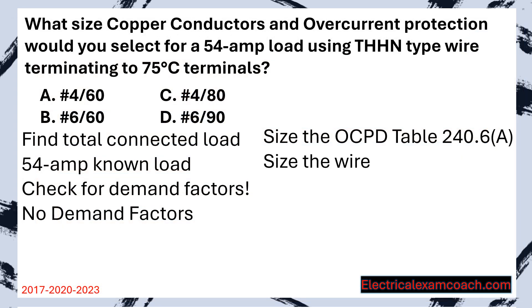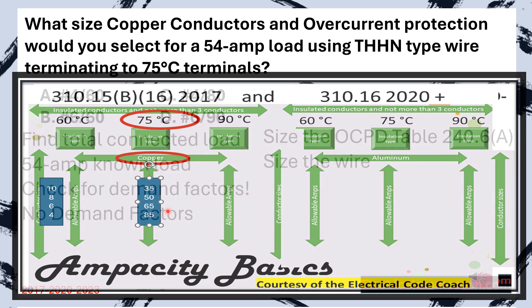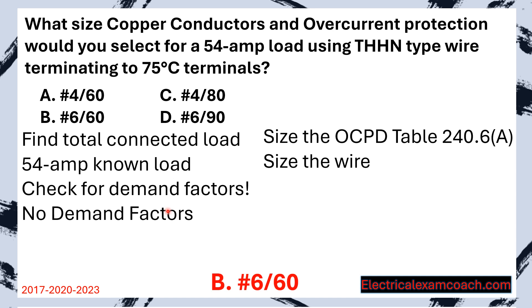Now let's size the wire. For that we head to our primary ampacity table. We start on the left-hand side on the copper side because our question asks for copper, and we're in the 75 degrees C column. We slide down and find a wire that covers the known load of 54 amps, and we select a 6 gauge wire on a 60 amp overcurrent device.